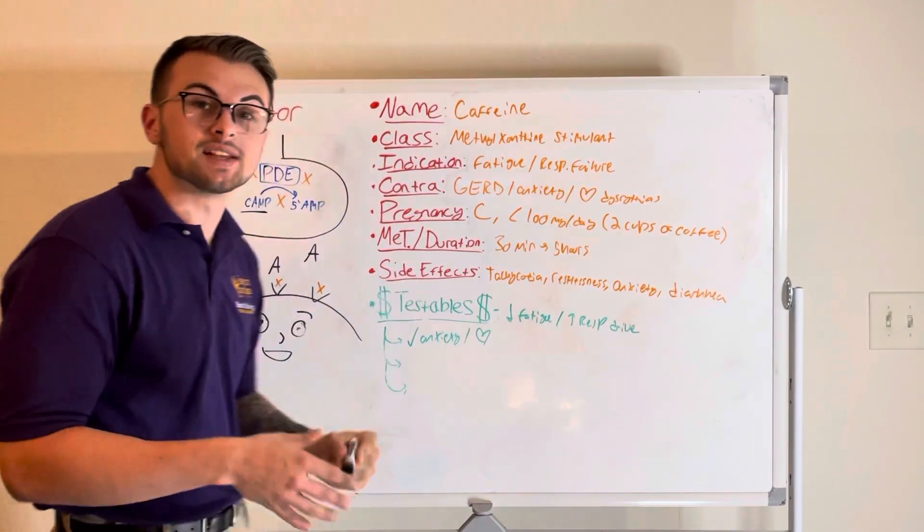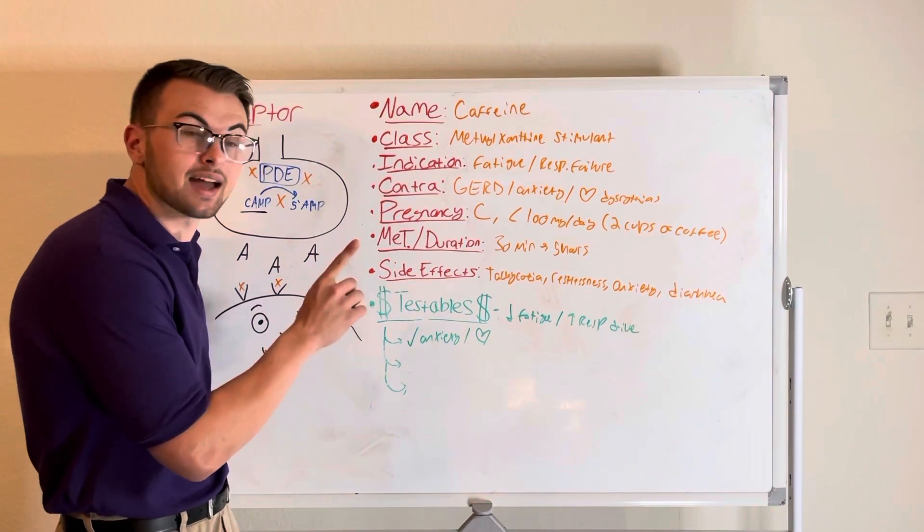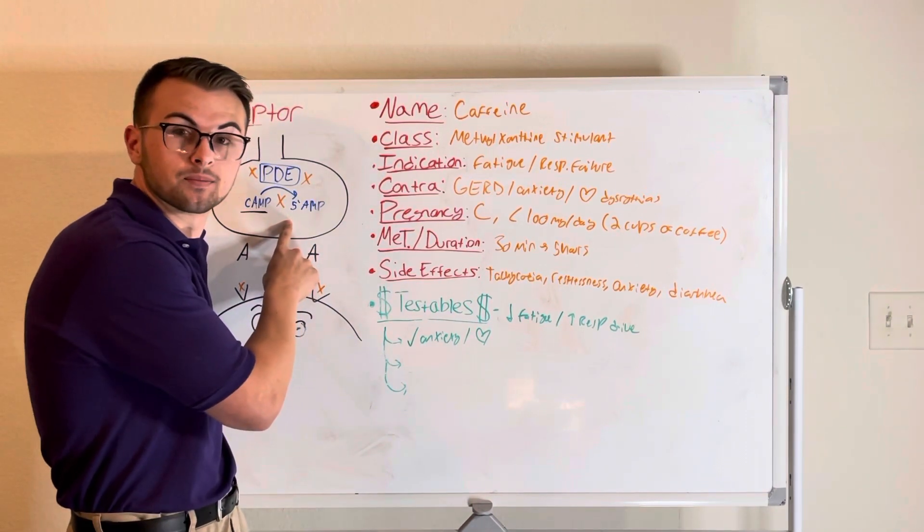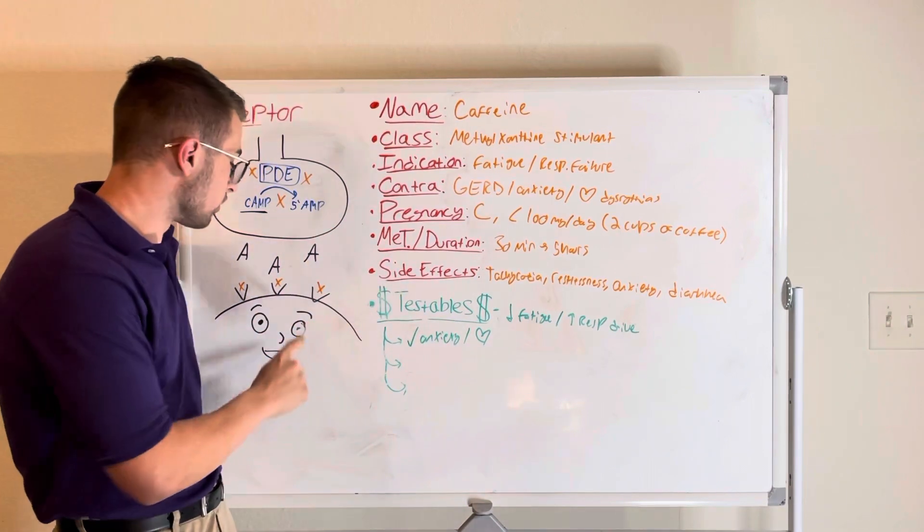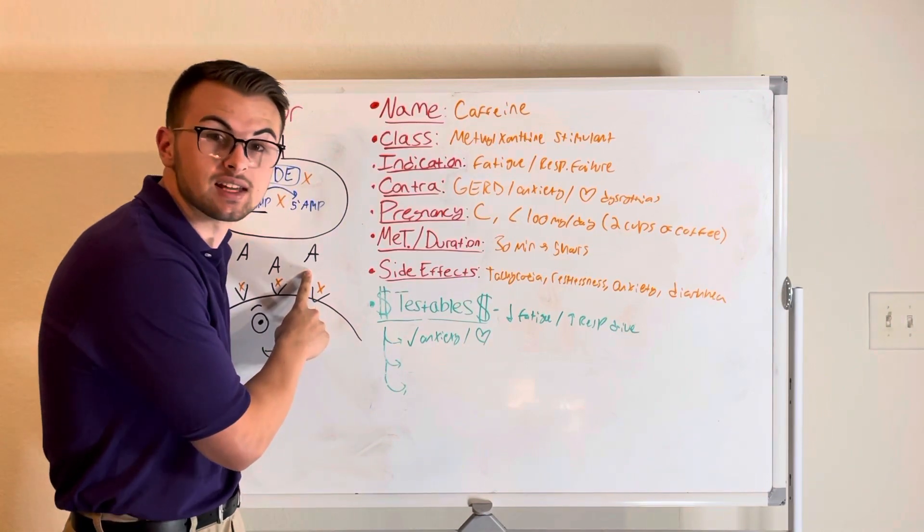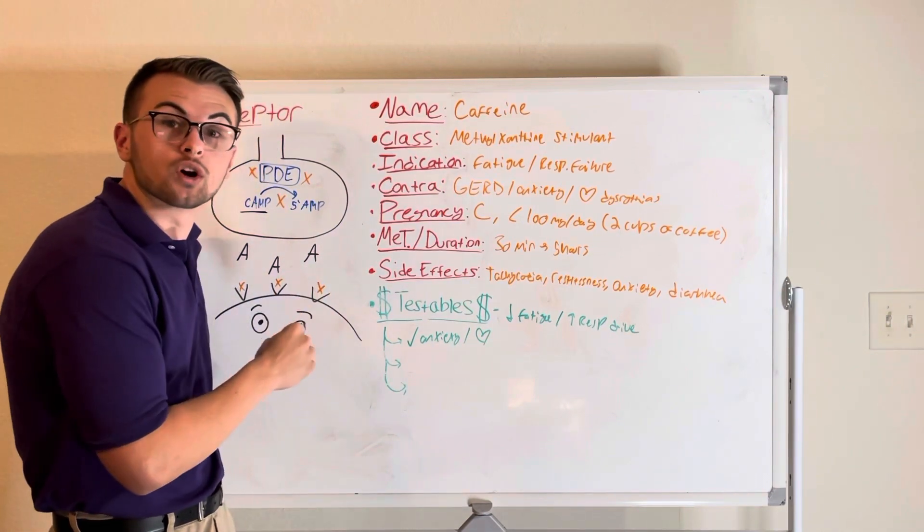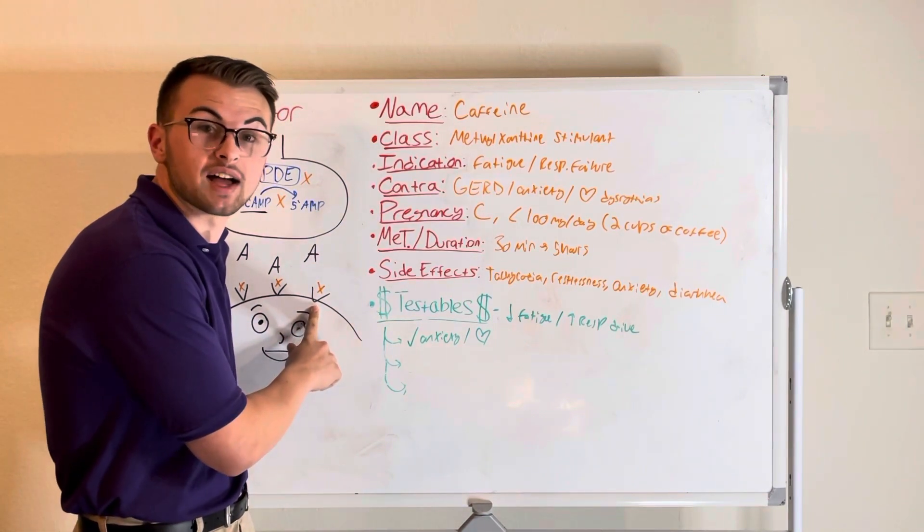Caffeine works on our adenosine receptors and on our phosphodiesterase enzymes. As the neurons in the brain work they accumulate a substance called adenosine which is what causes us to feel tired or fatigued. Caffeine works to block these receptors so that we do not feel as fatigued.